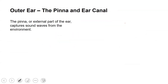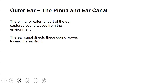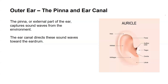The outer ear is also known as the pinna. The pinna, or the external part of the ear, captures sound from the environment. The ear canal then directs those sound waves toward the eardrum. The auricle, which is the outer ear, is made of different components including the helix, anti-helix, anti-tragus, and auditory canal as well as the fossa.